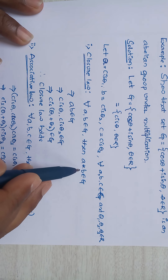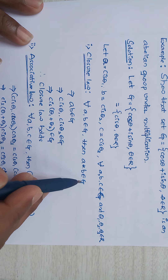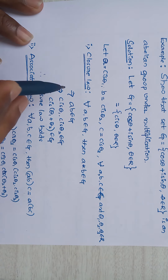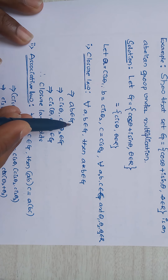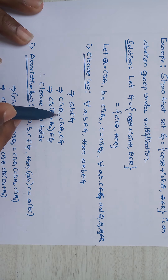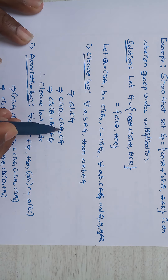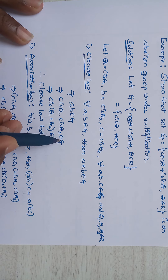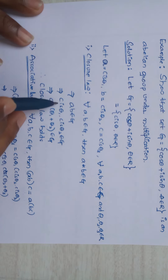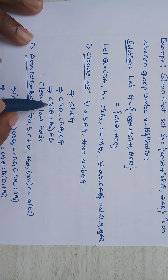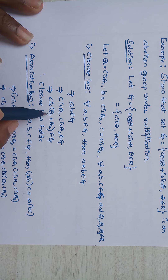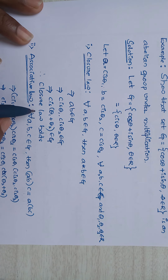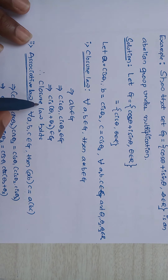Closure law: for all a, b ∈ G, a·b ∈ G. That implies cis θ1 · cis θ2 = cis(θ1 + θ2), which belongs to G since θ1 + θ2 ∈ ℝ. Therefore closure law holds.